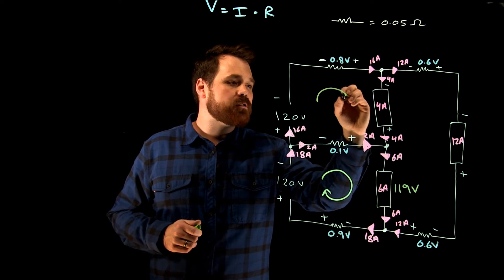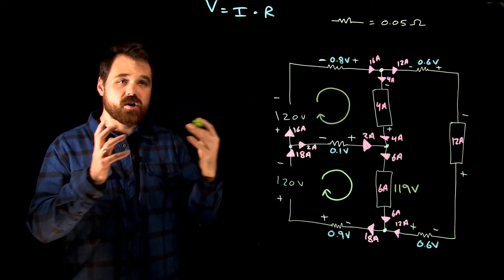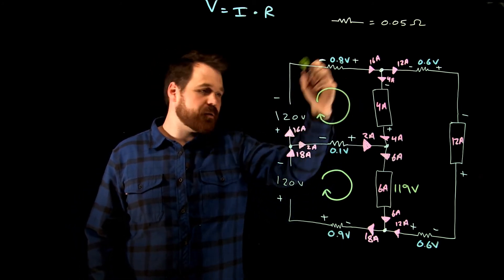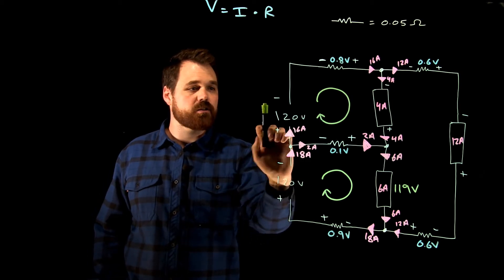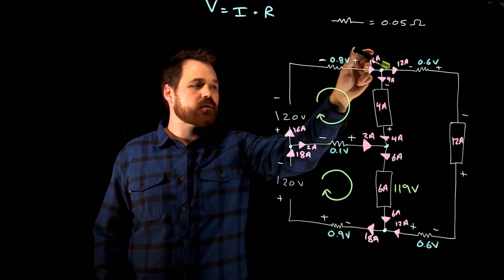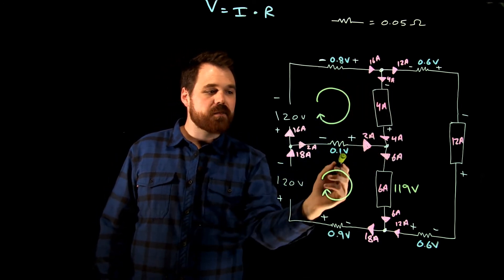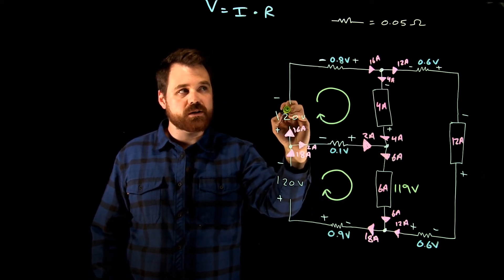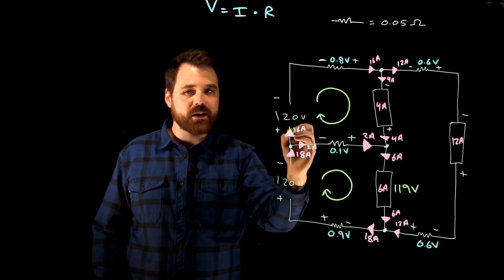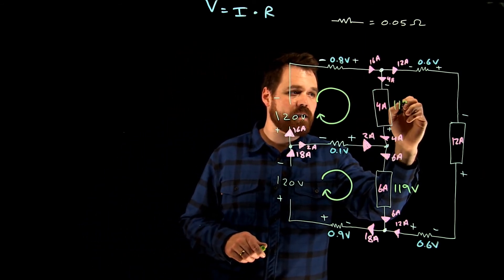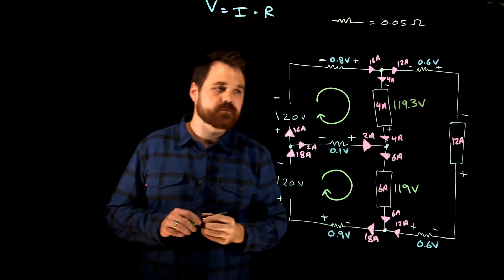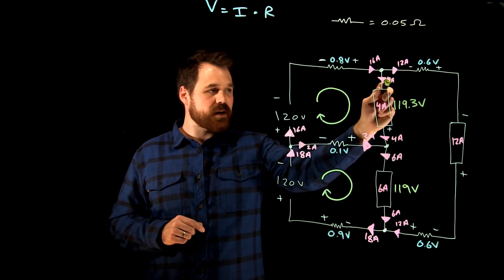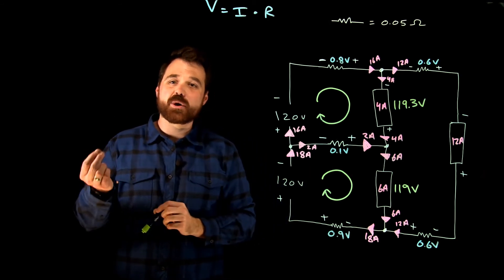Now I have the second loop up here, and this is going to be the toughest of all the loops. We're following the loop, not the polarity of the devices. Here I have positive 120, negative 0.8, and this one — because of the way the loop is going — is positive 0.1 volts. So 120 minus 0.8 plus 0.1 means this load has to be 119.3 volts. Let's do the math: 120 minus 0.8 minus 119.3 plus 0.1 equals 0.